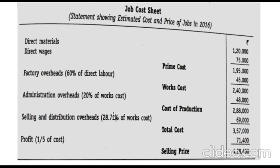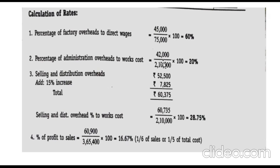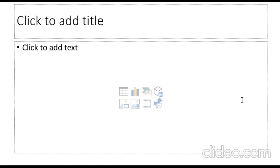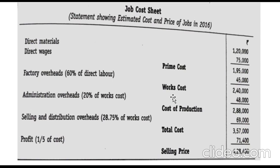Administration overhead percentage from the working note is 20 percent on works cost. Works cost is 2,40,000, so 2,40,000 into 20 percent equals 48,000. Works cost 2,40,000 plus administration overhead 48,000 gives cost of production of 2,88,000.